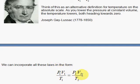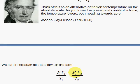PV over T is a constant. So at one point, the pressure, its corresponding volume divided by its corresponding Kelvin temperature, will equal the same configuration of variables at some other pressure and a volume that goes with that scenario and temperature.